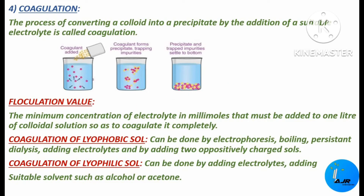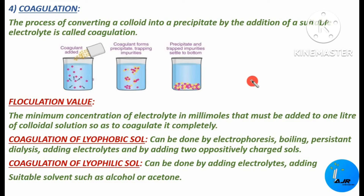The stability of the lyophobic sol is due to the charge on the colloidal particles. If the charge is removed from the particles, the particles will come together and aggregate, forming a coagulate. When the charge on the lyophobic colloidal particles is removed, those particles come together, aggregate, and form a precipitate.